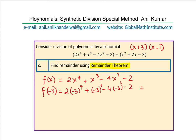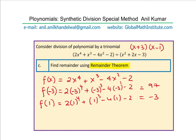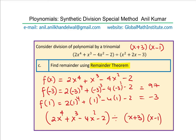Now let's find f(1): that is 2 times 1⁴ plus 1³ minus 4 times 1 minus 2, which gives 2 plus 1 minus 4 minus 2 = −3. However, these are individual remainders when dividing by each linear factor. The big question is: how do we get the collective remainder when dividing by the full quadratic x squared plus 2x minus 3?